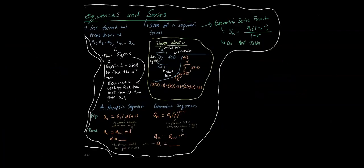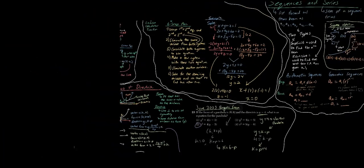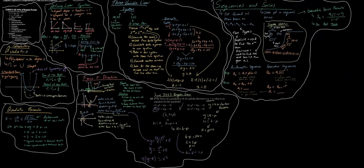This unit was definitely a lot, but the main things to remember are that you need to know your Algebra 1 fundamentals — things like completing the square, factoring, and so on. Make sure you have those concepts down so you can build on them for more advanced topics like three-variable linear systems and focus and directrix.